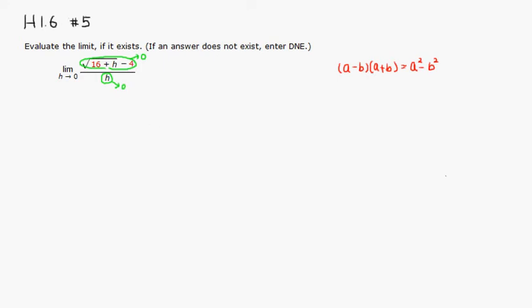What we're going to do is multiply top and bottom by exactly the same thing. We're going to have square root of 16 plus h, but instead of a negative sign, we're going to put a positive sign here and a 4. And you're going to do exactly the same thing to the denominator so that we don't change the quantity. Let's multiply that out.